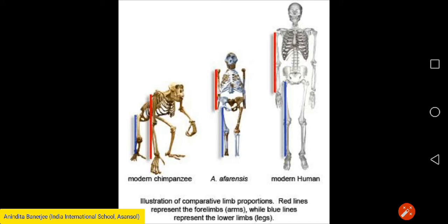Human beings use their hind limbs or legs to walk, to stand, to run and to swim. The legs also help us to stand straight and have an erect position. The forelimbs or arms are used to hold objects. On the screen, red lines represent the forelimbs or arms, while blue lines represent the lower limbs or legs.